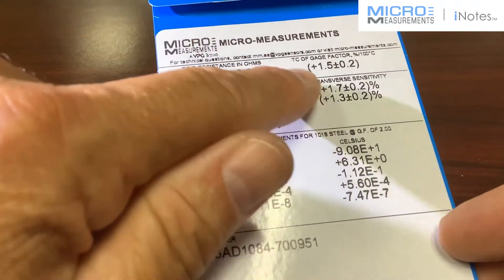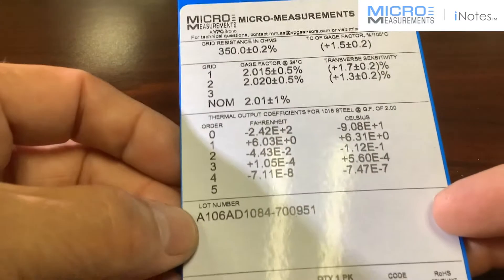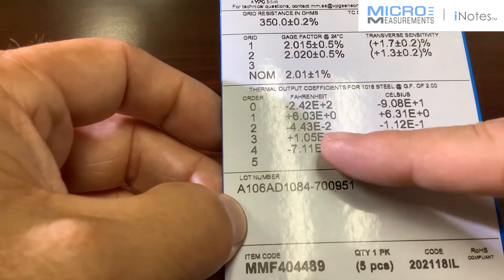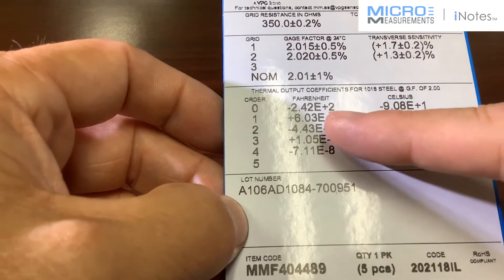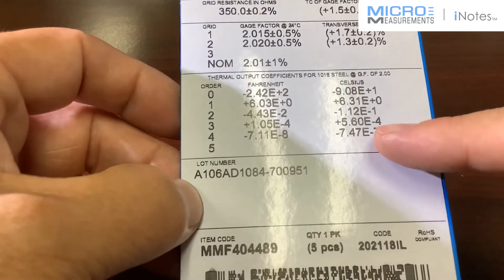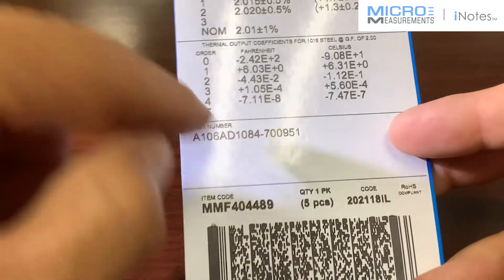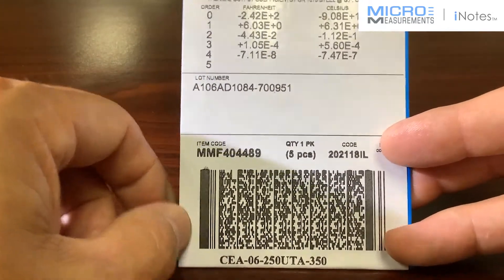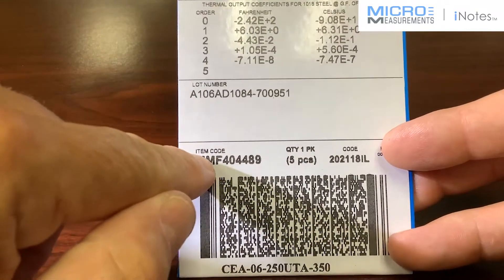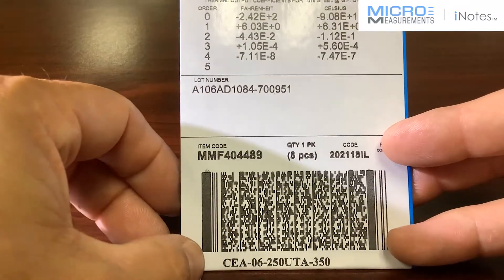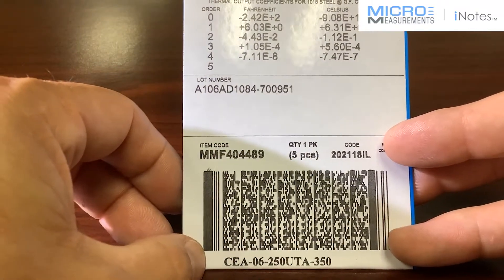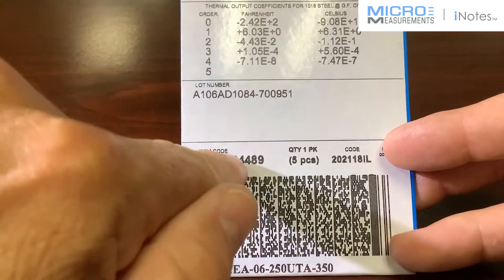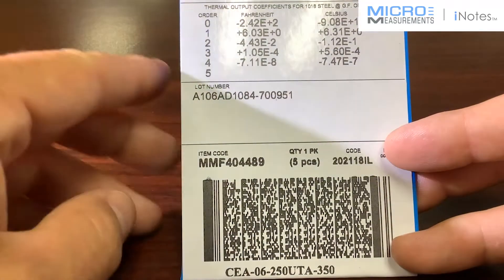Transverse sensitivity, just over 1% for the two grids, and as we work our way down, you'll see the thermal output coefficients. It's a fourth-order equation. You'll see in degrees Fahrenheit and degrees Celsius. A lot number, which is important for traceability, and then you'll get down here to the bottom, and you'll see an item code. Now, this will be a new item code for these T-rosettes, so if you're familiar with the 250 UTs, this is now a UTA, and it will have a new item code to reflect that new construction.